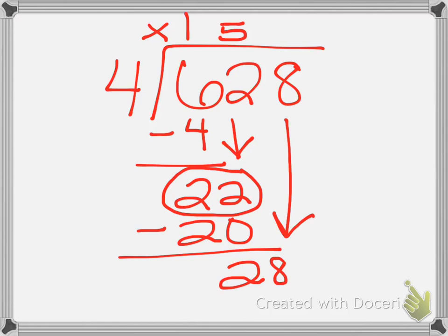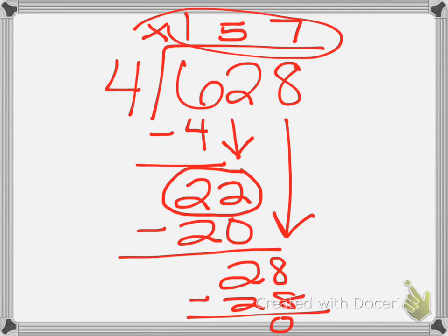And then ask again, how many times does 4 go into 28? And they should say 7 times 4 equals 28, and I subtract, and I am not left with a remainder this time. So my final quotient is 157.